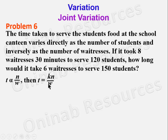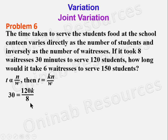Substituting T = 30, n = 120, w = 8: 30 = 120k/8 = 15k. Dividing both sides by 15 gives k = 2.